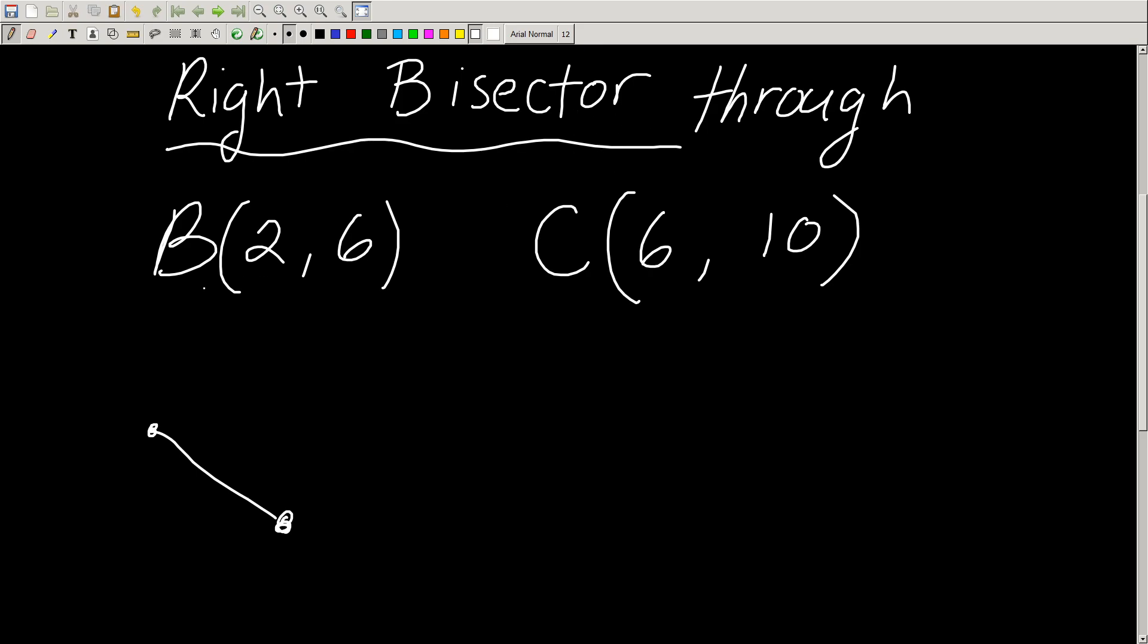In this case it says the right bisector through BC. Now BC has this line segment, let's say, and you're going to draw a line through that line segment, a dashed line, and it's going to go through the middle, hence the phrase bisect.